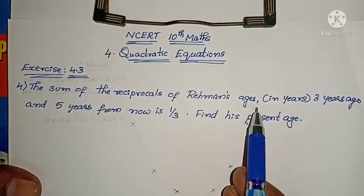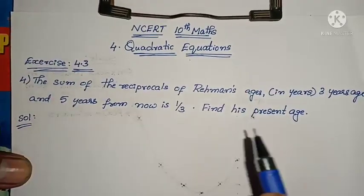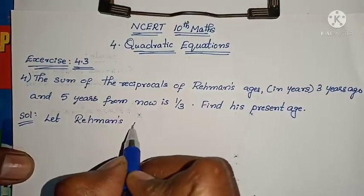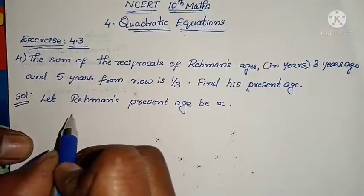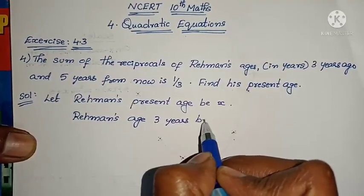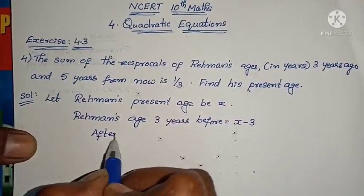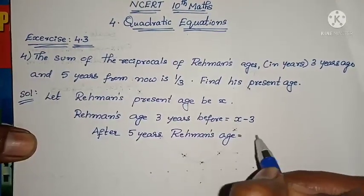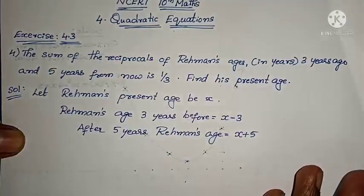The sum of the reciprocals of Rahman's age 3 years ago and 5 years from now is 1/3. Find his present age. I don't know the present age of Rahman, so I am taking it as X. Let Rahman's present age be X. Rahman's age 3 years before equals X minus 3. After 5 years, Rahman's age equals X plus 5.